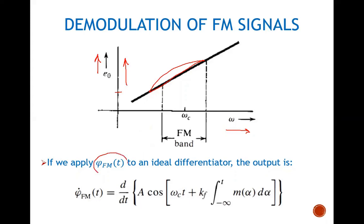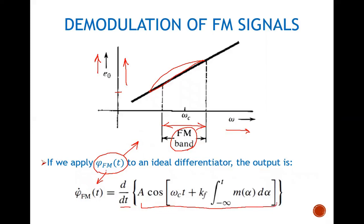Now let's look at an FM signal. If we apply this signal as input to a circuit that has a linear response within a certain range of frequencies — that range should be the band of the FM signal at the input — and if it is passed through an ideal differentiator, the output would be the differentiated version of this signal. We take the time derivative, where the expression inside the bracket represents the FM signal, and this part represents the change in frequency dependent upon the baseband signal m(alpha).